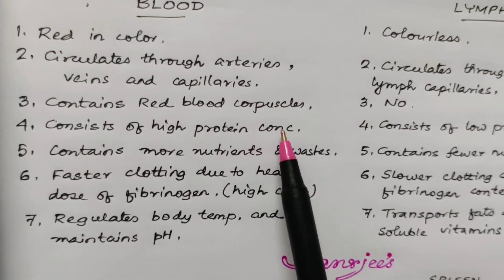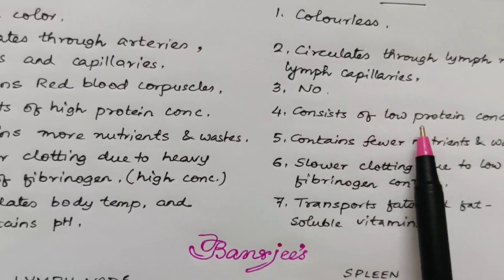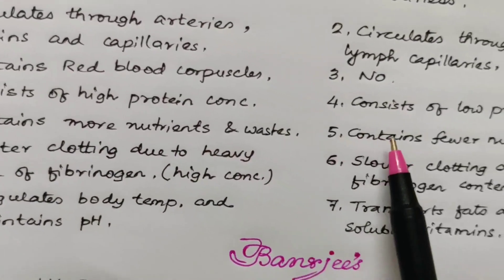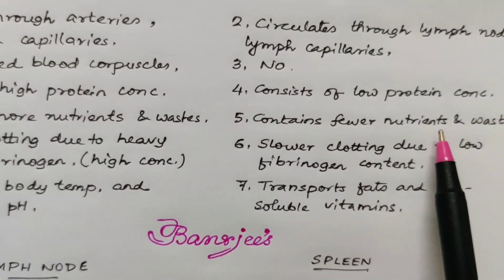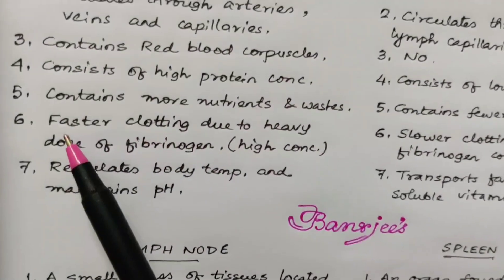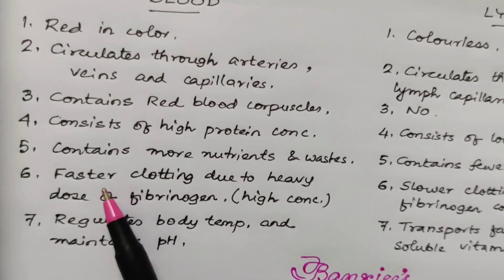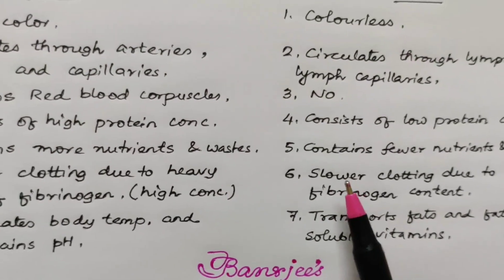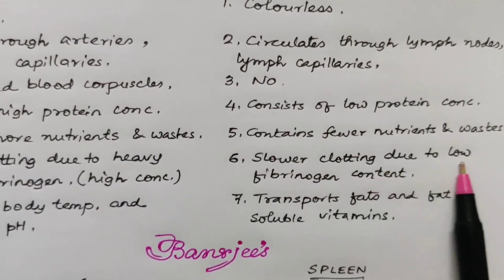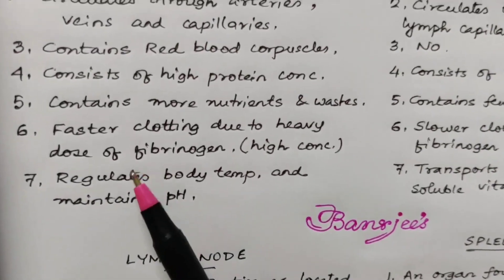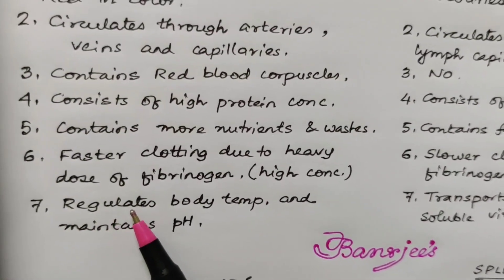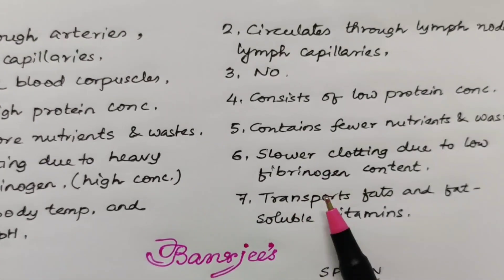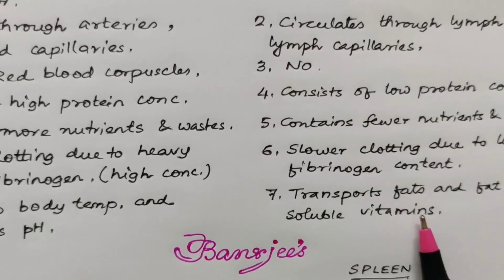Blood consists of high protein concentration, whereas lymph consists of low protein concentration. Blood contains more nutrients and wastes; lymph contains fewer nutrients and wastes. In blood, faster clotting occurs due to high concentration of fibrinogen, whereas in lymph clotting is slower due to low fibrinogen content. Blood regulates body temperature and maintains pH, whereas lymph is concerned with transportation of fats and fat-soluble vitamins.